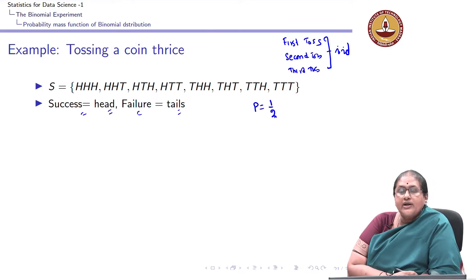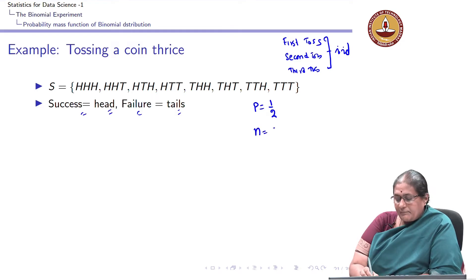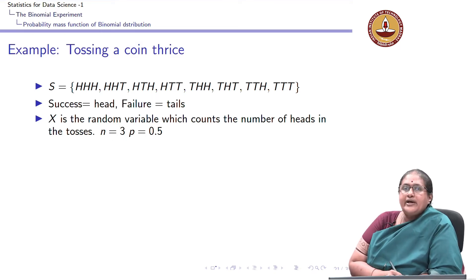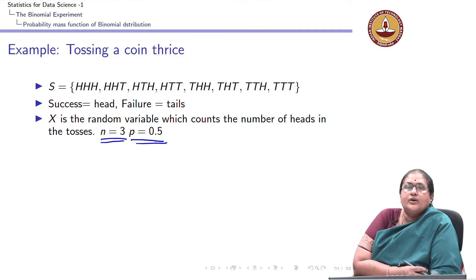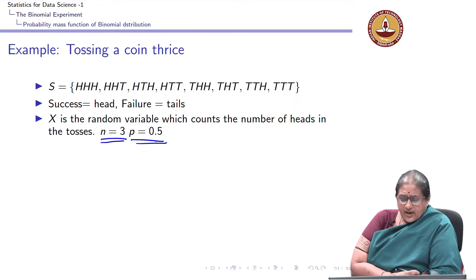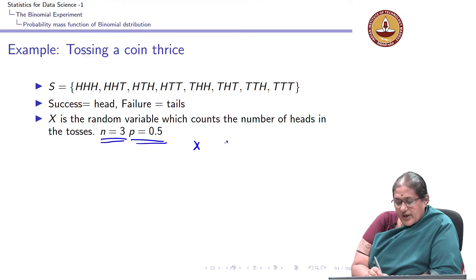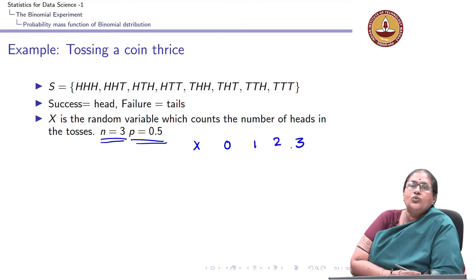If I am tossing a coin thrice, I am repeating this Bernoulli experiment 3 times, so my n equals 3. Tossing a coin thrice can be viewed as a binomial experiment with parameter n equal to 3 and p equal to one half. The random variable x takes the values 0, 1, 2 up to n, and here n is 3, so it takes the values 0, 1, 2, and 3.